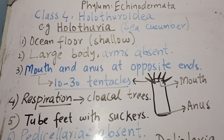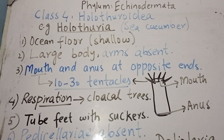The next class is Holothuroidea. The well-known member is Holothuria, commonly known as sea cucumber. Members are found on the ocean floor in shallow water. They have a large, elongated body without arms. Unlike the first three classes which have oral and aboral surfaces, in Holothuroidea there are two opposite ends — mouth and anus are present at opposite ends of the body.